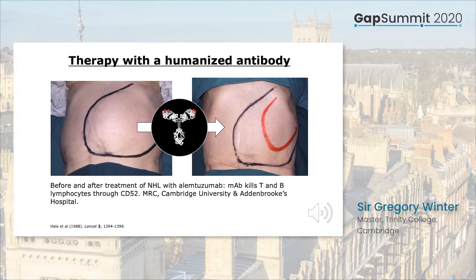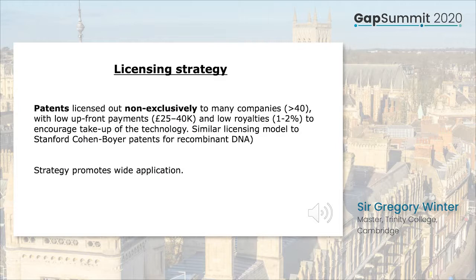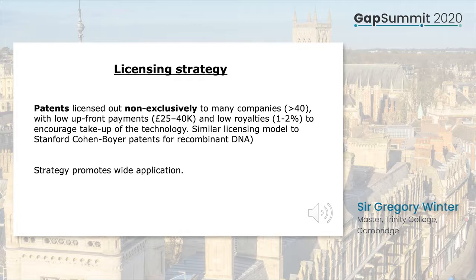The industrial impact was immediate and several companies wanted access to the technology. We had a patent and the know-how, and now had to deal with how to license it. Should we sell the patent to one company and let them handle commercialization, or take it upon ourselves to license many companies? In the end, after some argument within the Medical Research Council, we decided to license many companies on a non-exclusive basis under easy terms, aiming to encourage wide application and avoid challenges to the patent — a model similar to Stanford University's licensing of recombinant DNA technology, the so-called Cohen-Boyer model.